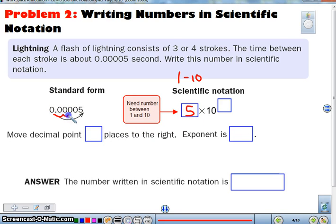Now I want to count how many places I'm moving it. 1, 2, 3, 4, 5 places. So that tells me my exponent is 5, but because this is a small number, it's going to be negative. So you move the decimal 5 places to the right, the exponent is negative 5. If we are writing our answer, 5 times 10 to the negative 5.